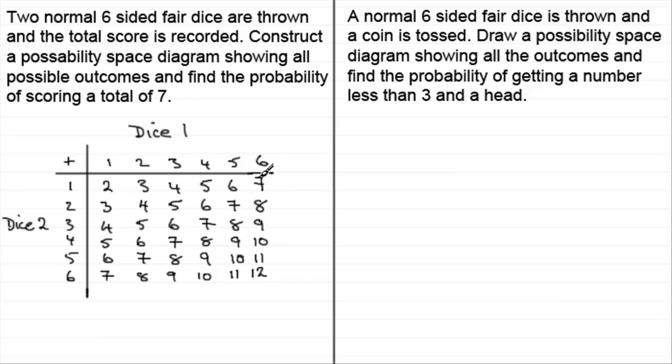So when it comes to working out the probability of scoring a total of seven, out of those 36, we've got one, two, three, four, five, six ways of getting the seven. So the probability of getting a total score of seven will be six out of 36 possible outcomes. And if you cancel that down, it's one sixth.